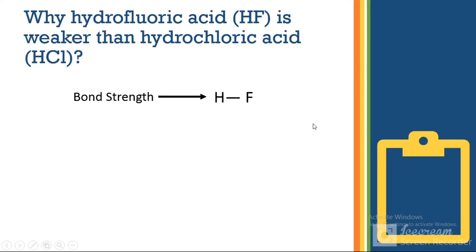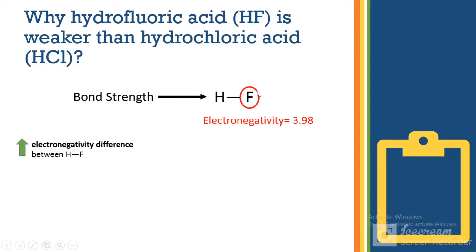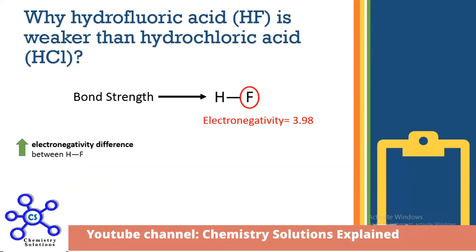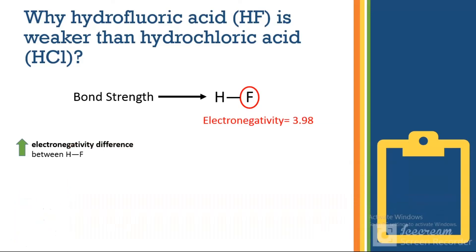Fluorine is the most electronegative element of the periodic table, with an electronegativity of 3.98. Because of this high electronegativity, it strongly attracts protons. When the most electropositive and most electronegative elements combine, they create a very strong bond. This large electronegativity difference results in stronger interactions in hydrofluoric acid compared to hydrochloric acid.